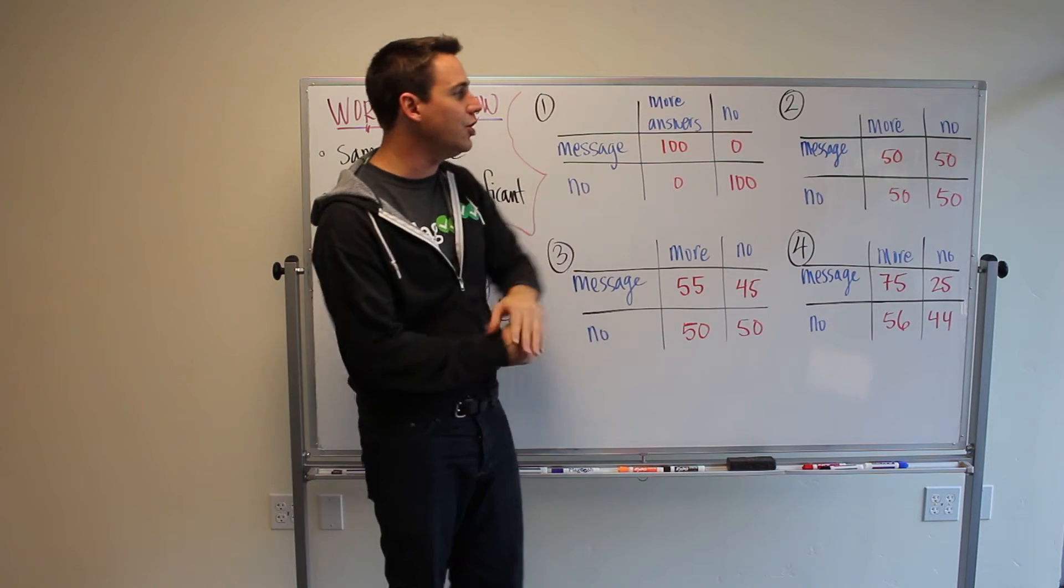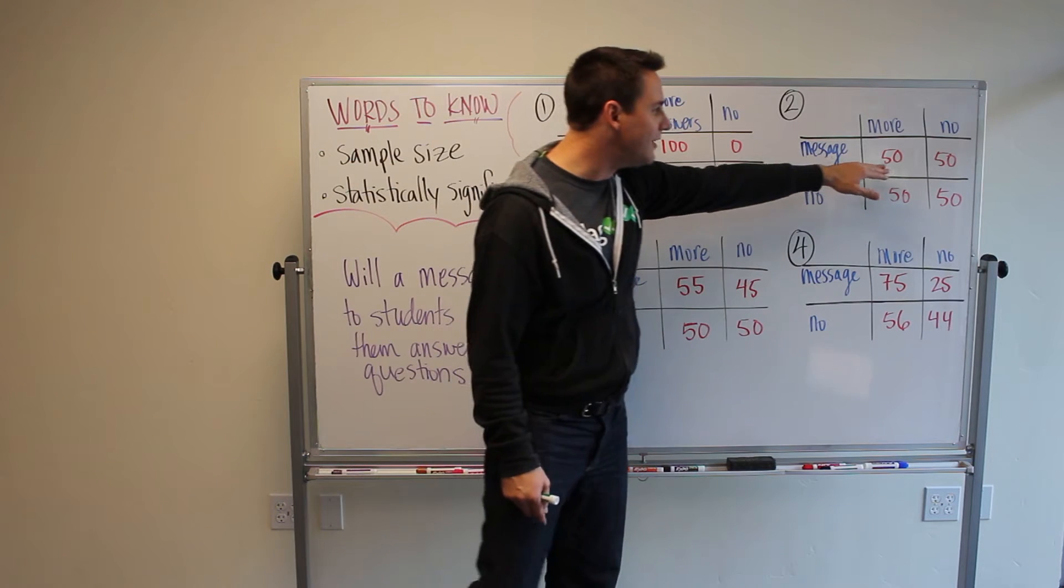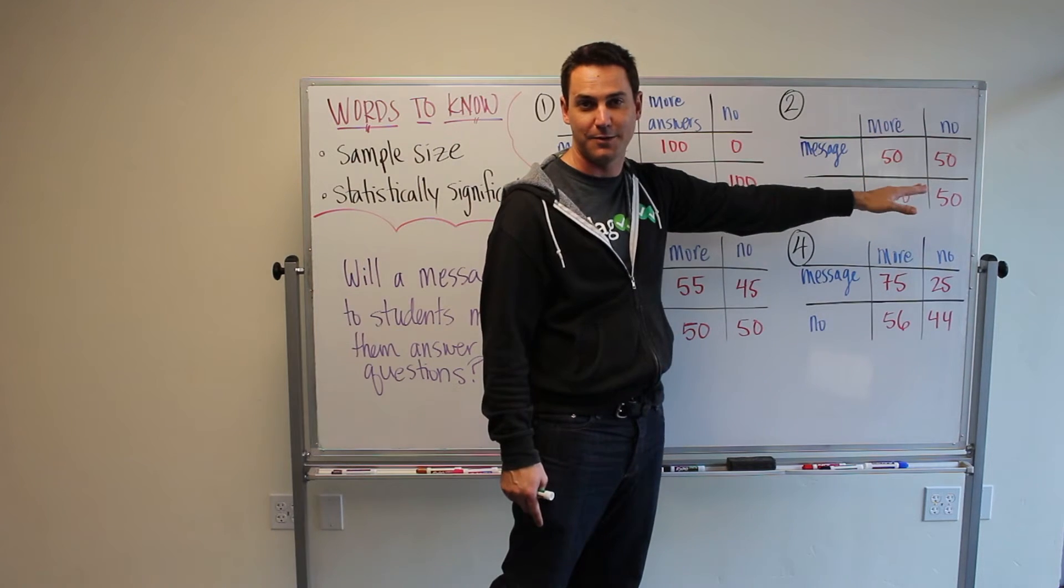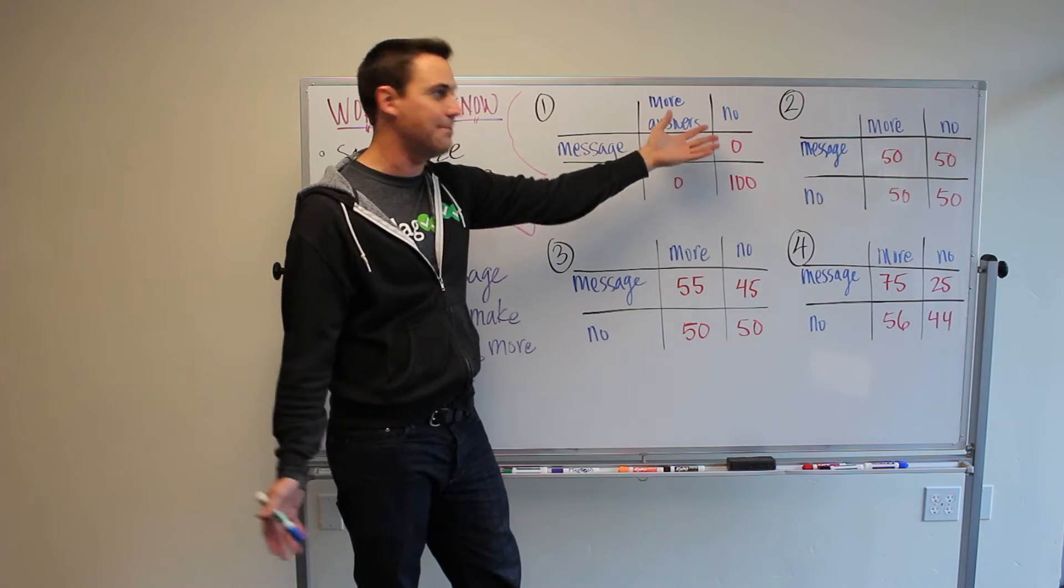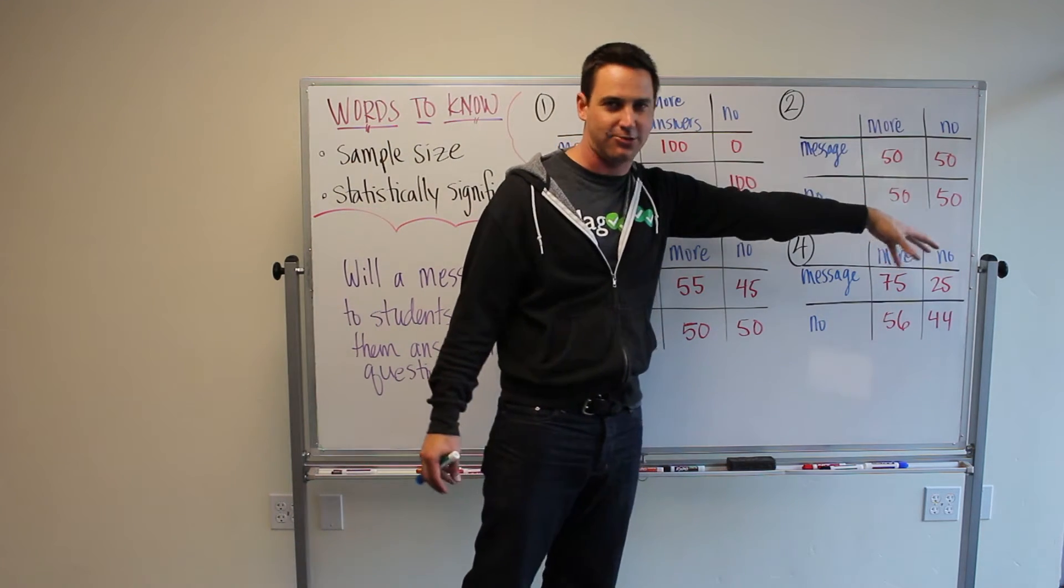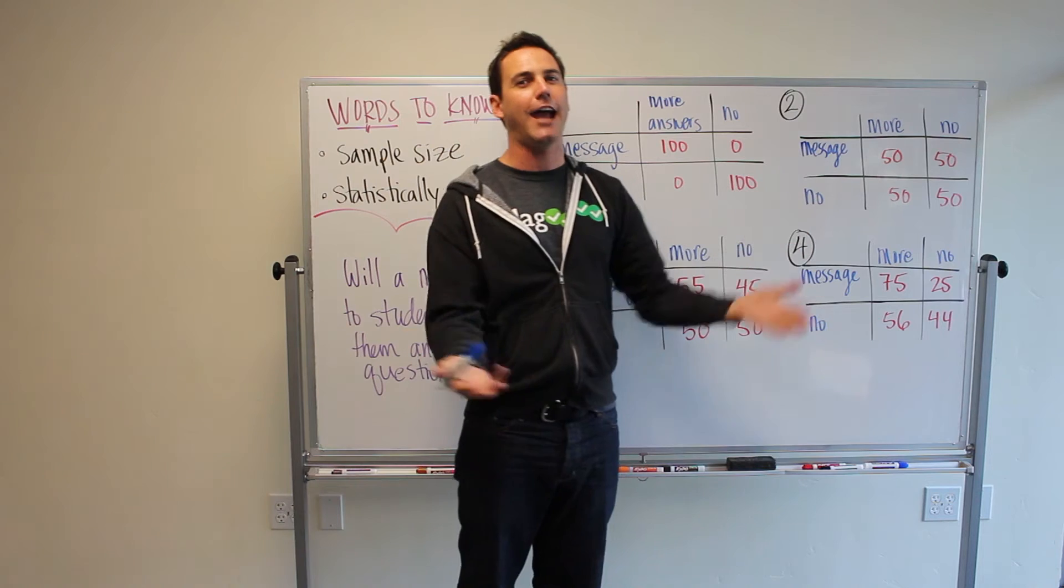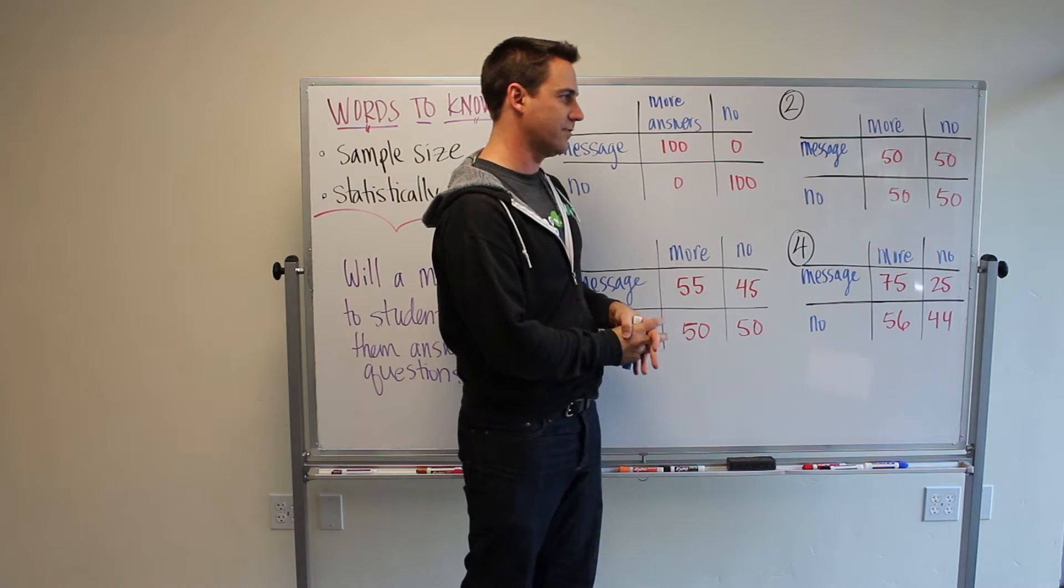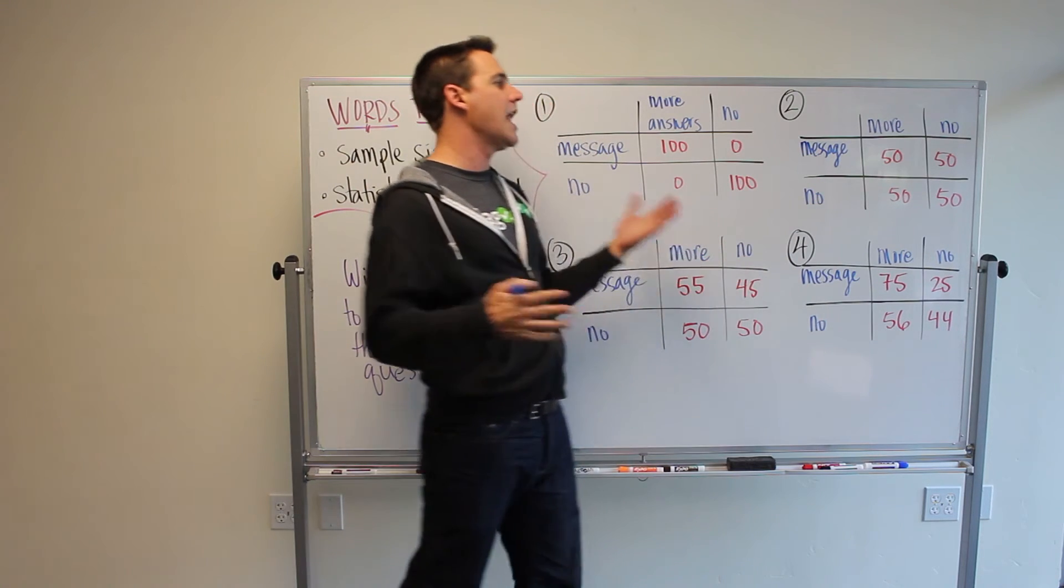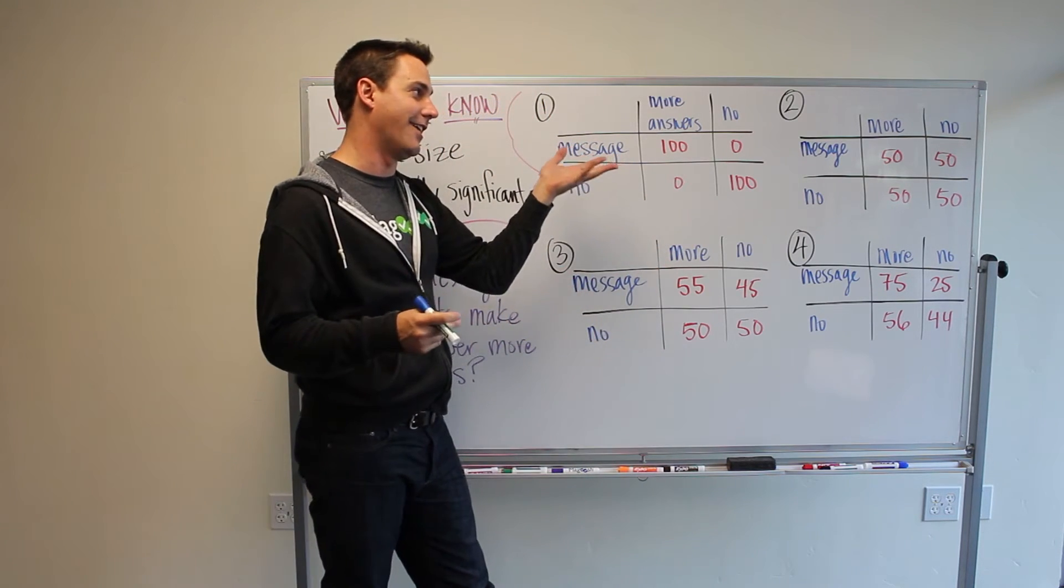If we look at scenario number two, we see 100 people get the message, 100 people do not get the message. And then we see 50 of them answered more questions, 50 did not. And then if they didn't get the message, 50 people answered more questions and 50 people did not. So this is just, it doesn't matter. It's a direct split in half of people answering more questions, not answering more questions. Unambiguous. It doesn't help us to know if a message actually is helping students to study more and answer more questions. So again, this is not representative of what we see in the real world and not like tests that people conduct. It's never that unambiguous.